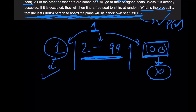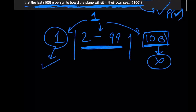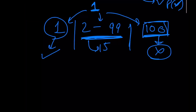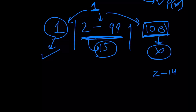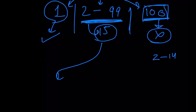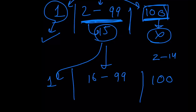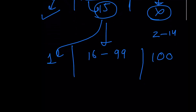Now what happens in the middle case — this is where the entire loop comes into picture. Let's say person number one picks seat 15. All passengers from number 2 all the way to 14 get to sit on their own seats. But when person 15's turn comes around, he sees that person number one sat on his seat, so he has to choose a seat at random. Person 15's choices are: seat one, seat 100, or any seat from 16 all the way to 99. So we see three similar cases, and now you're going to start to see the loop.